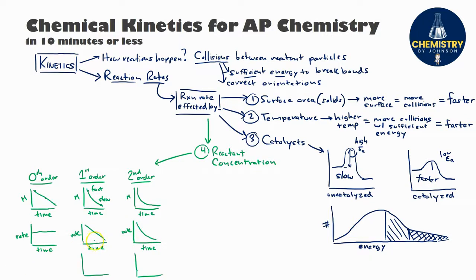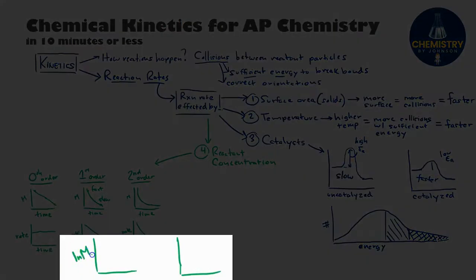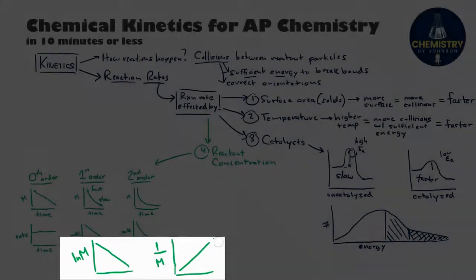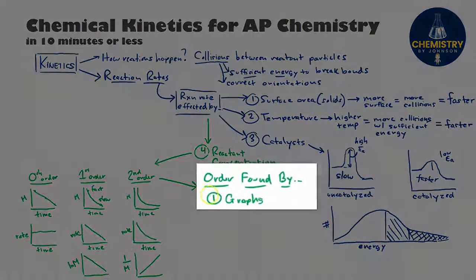Identifying reaction orders is straightforward for zeroth order because the concentration versus time graph is a straight line. It's harder to distinguish first from second order using only a concentration versus time graph. A graphical trick: if a graph of the natural log of concentration versus time gives a straight line, the reaction is first order. For second order reactions, a graph of the inverse of concentration versus time gives a straight line.